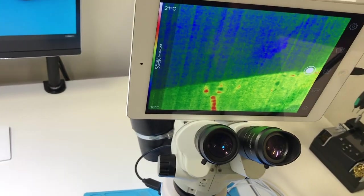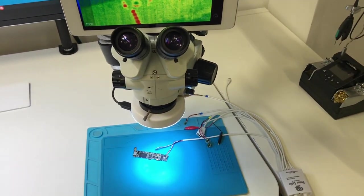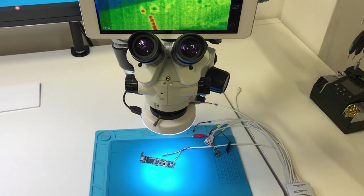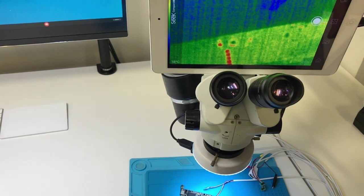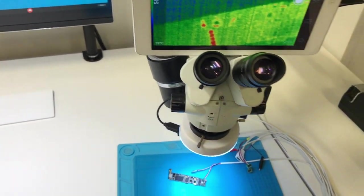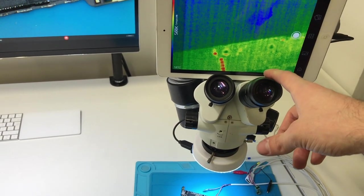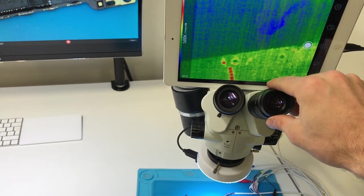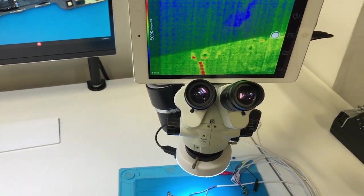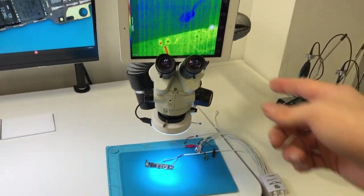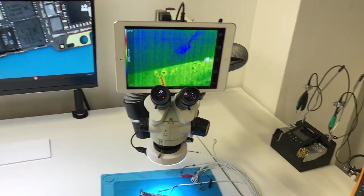You usually have the Seek thermal camera directly connected to the iPad. However, STG Repairs from Miami, Amando, he showed a cable you can buy from Amazon, which is an extension. And he has a similar setup, except it's not on the scope itself. He has a separate stand for it. So obviously, that is also very useful, having it directly on the scope.